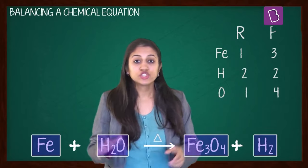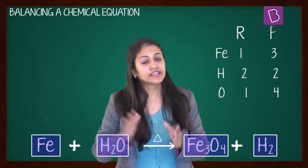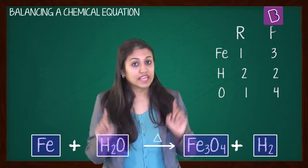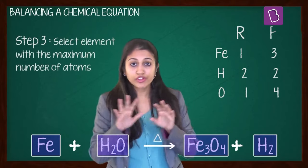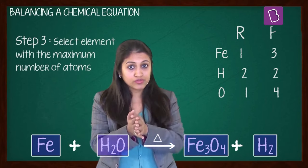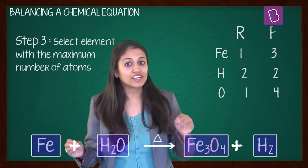Step 3: It's often convenient to start balancing with the compound that contains the maximum number of atoms. It can be a reactant or a product. In that compound, select the element which has the maximum number of atoms. If I use all these criteria, you can tell me which one we would select. Fe3O4, right? And which element would you select in that? Oxygen.